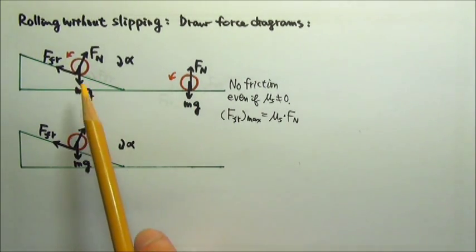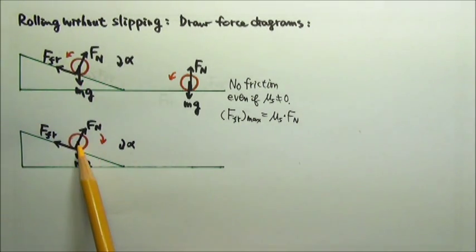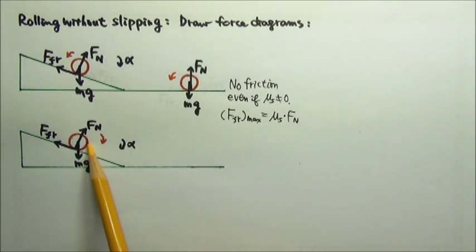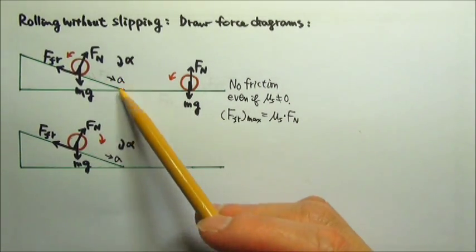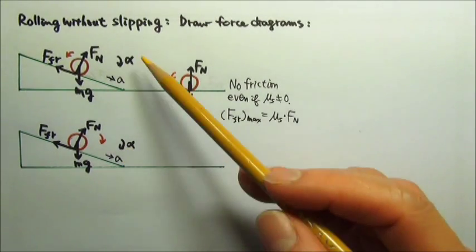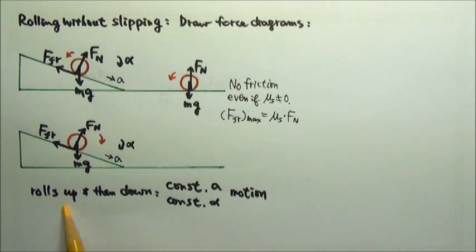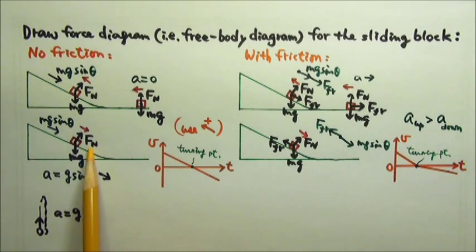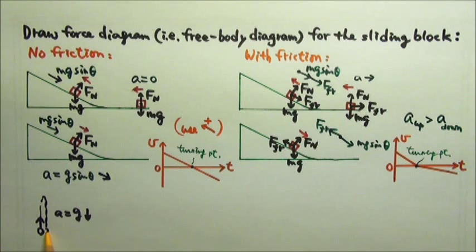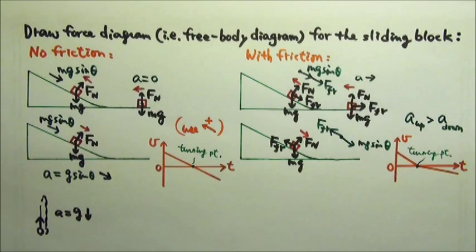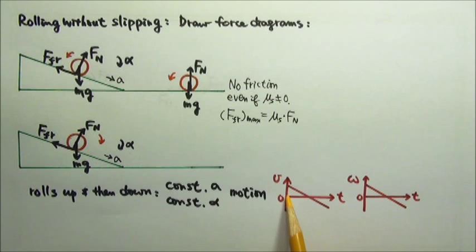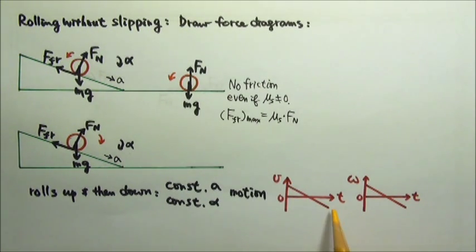Whether the sphere is rolling without slipping up or down the incline, the force diagrams are exactly the same. The force and torque equations give exactly the same down-the-incline acceleration and clockwise angular acceleration. So if a sphere rolls without slipping up an incline to a maximum height and then rolls back down, the whole trip is constant acceleration and constant angular acceleration motion — symmetric, like a block on a frictionless incline or an object tossed straight up. If it takes three seconds to go up, it takes three seconds to come back down, and if it starts with a certain speed, it returns at the same speed — same for the angular speed.